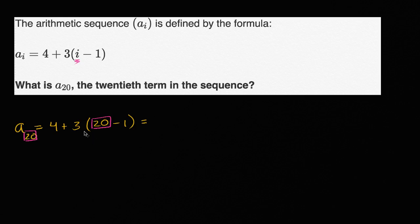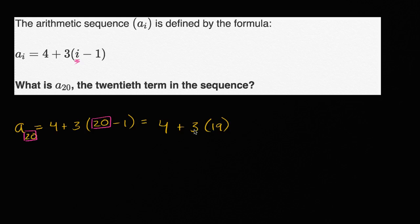This is going to be equal to four plus three times — 20 minus one is 19. Three times 19 is 57, that's 30 plus 27, so this is 57.